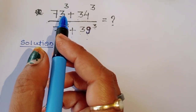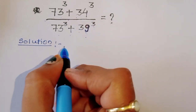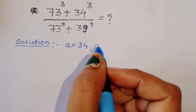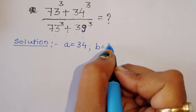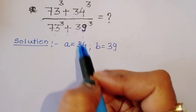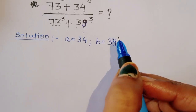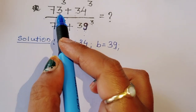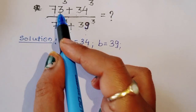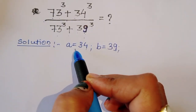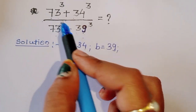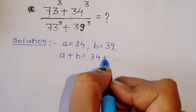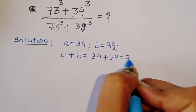If you notice here, we can consider the second term as 34. So we let A equal to 34 and B equal to 39. When we add A plus B, that is 34 plus 39, we get 73. So this first term, 73, automatically comes when we add A plus B. A plus B is equal to 34 plus 39 is equal to 73.